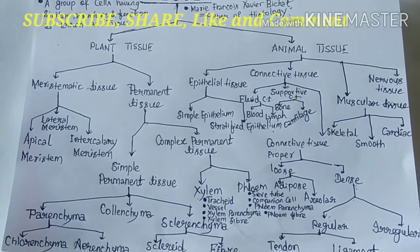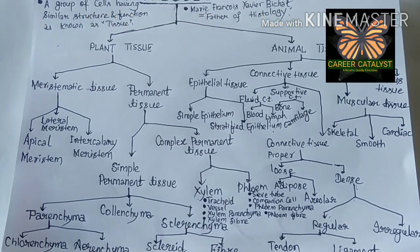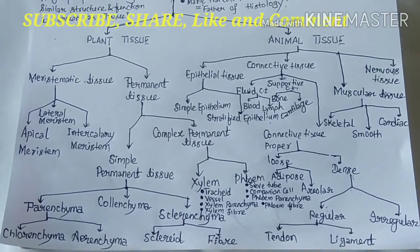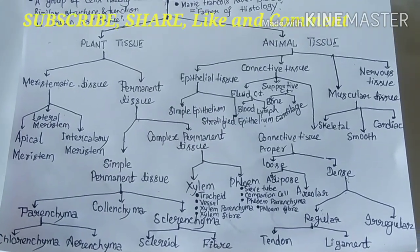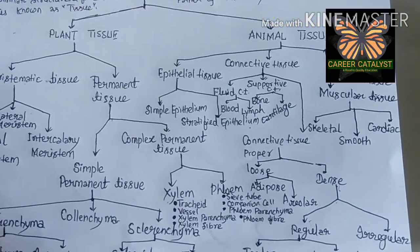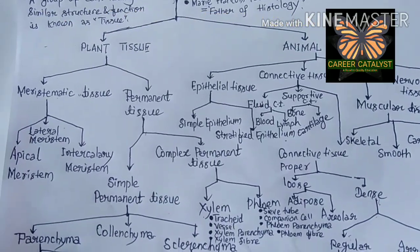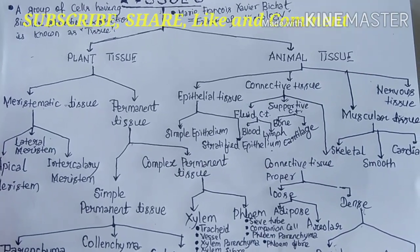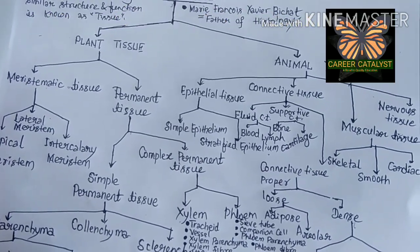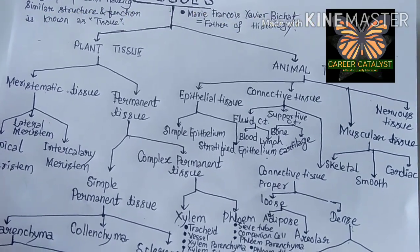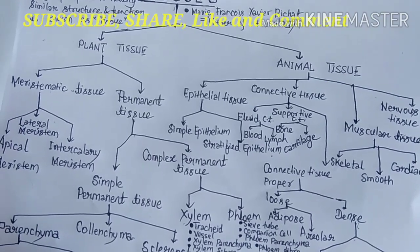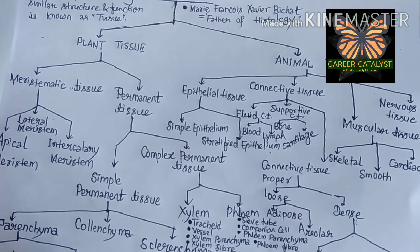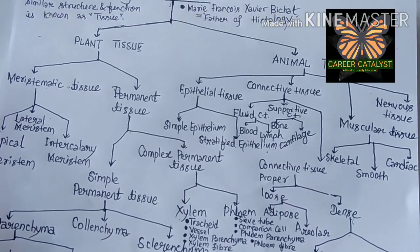Connective tissue is a group of connecting cells having similar structure and function. It is the most widespread tissue in the animal body. There are three sub-divisions: connective tissue proper, supportive connective tissue, and fluid connective tissue. Fluid connective tissue is subdivided into two categories: blood and lymph.